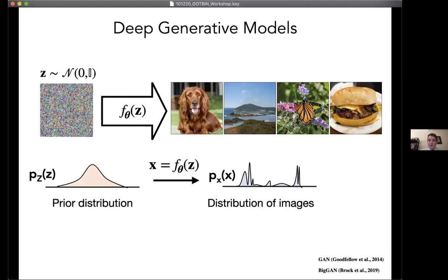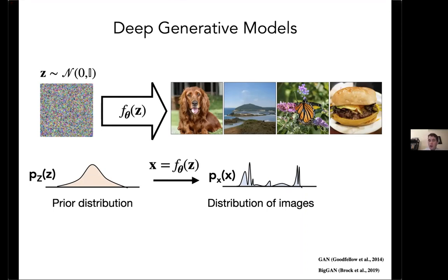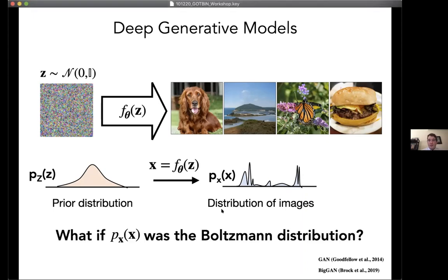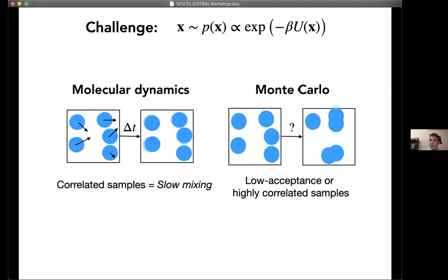The idea is to map a distribution that is easy to sample from through a trainable neural network into one that is otherwise difficult to sample from. The fundamental question we asked: what if instead of a distribution of images, this was the Boltzmann distribution — proportional to the exponential of minus beta times U of x? Then we would generate some noise, pass it through a neural network, and get back a protein conformation that is somehow physically valid.